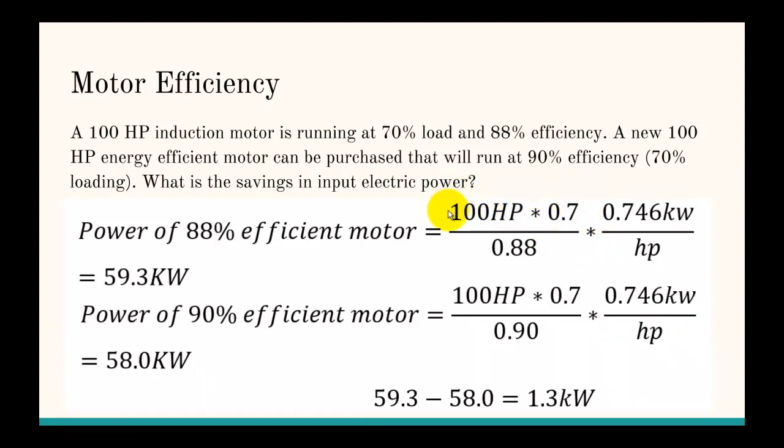This is basically 100 horsepower at full loading, so it outputs 0.7 of that, or 70 horsepower. Then you're dividing the output of the motor by the efficiency, and that gives you the input. Then you're converting kilowatts to horsepower using this unit conversion factor.